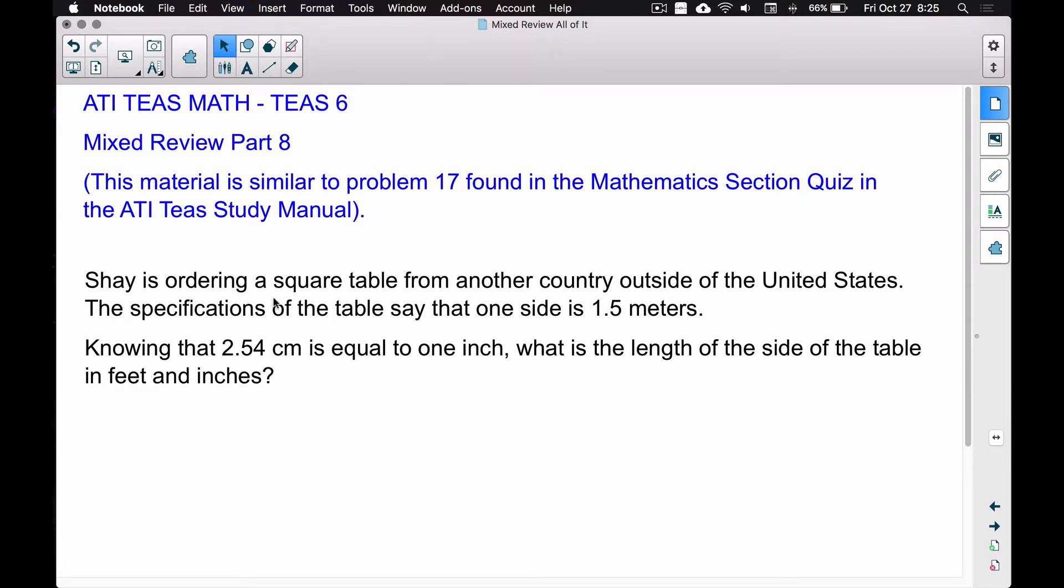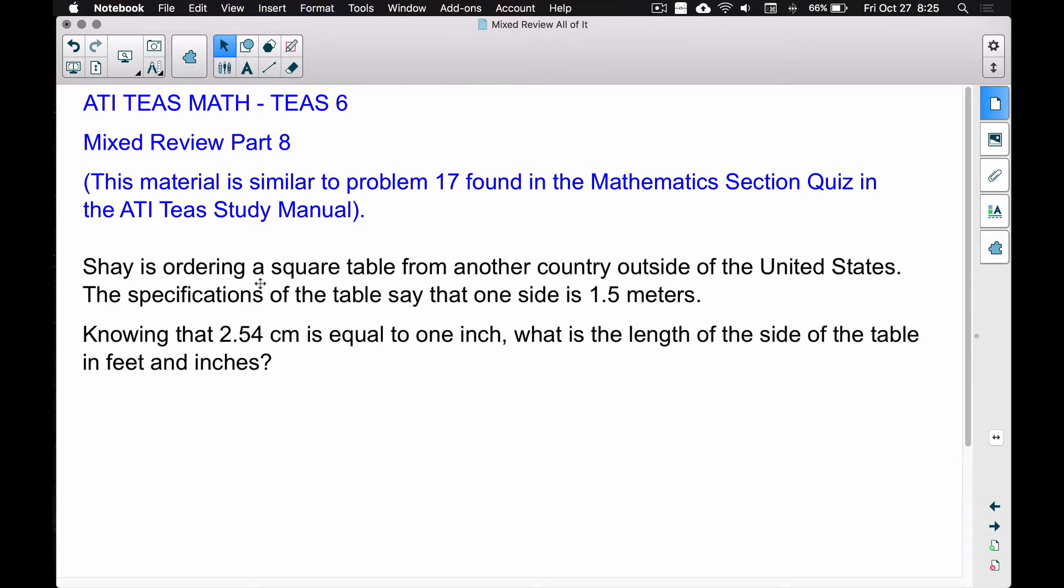We have an example that deals with the metric system and the standard measuring system. Shay is ordering a square table from another country outside of the United States. The specifications of the table say that one side is 1.5 meters. Knowing that 2.54 centimeters is equal to 1 inch, what is the length of the side of the table in feet and inches?